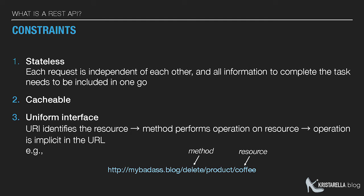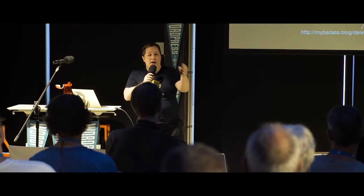What makes an API RESTful are six specific things. One is that it needs to be stateless — it doesn't matter if it's your first request or your fifth request, the API doesn't care, and it doesn't rely on previous information. An example of a non-stateless task is a form or survey where you have to go through each page in turn. The REST API's statelessness means you send all the information in one go and get information back.